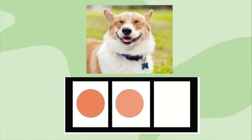Listen and watch as I put down one dot for each sound in the word dog. D, o, g. There are three sounds in the word dog.